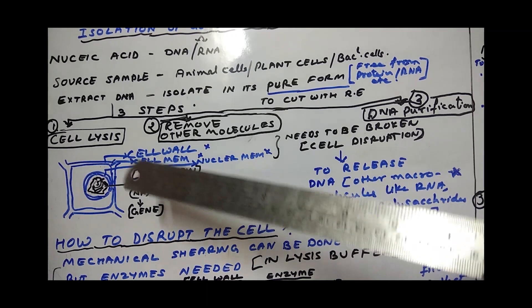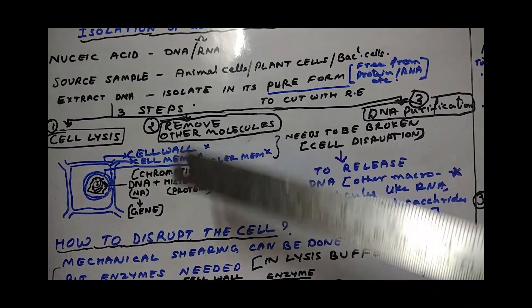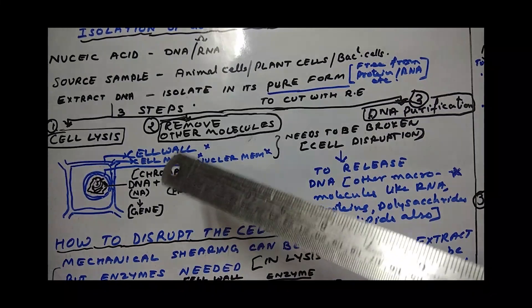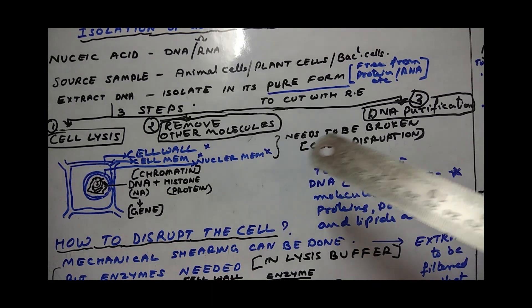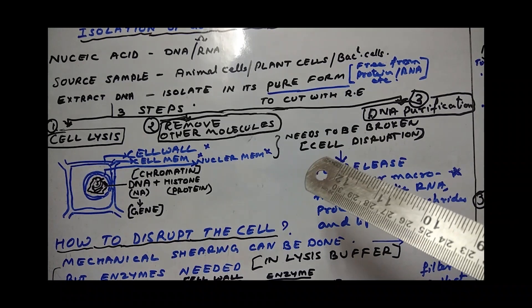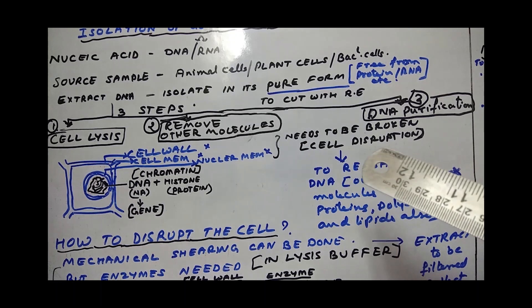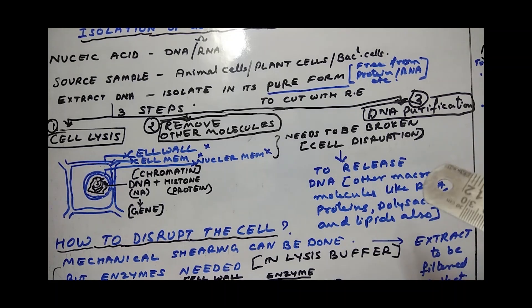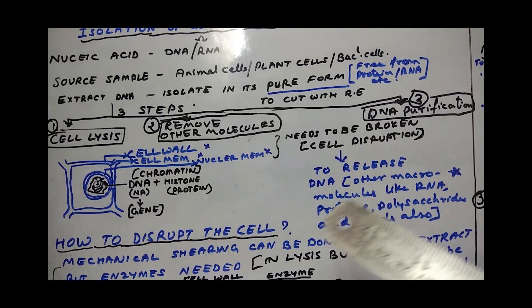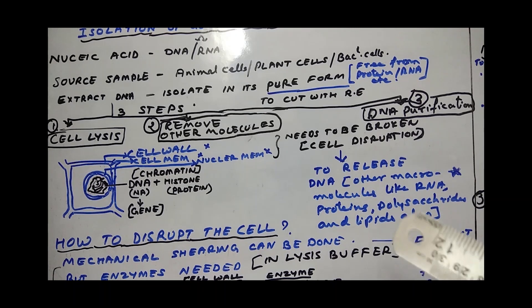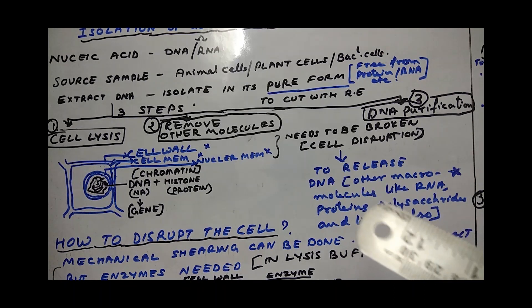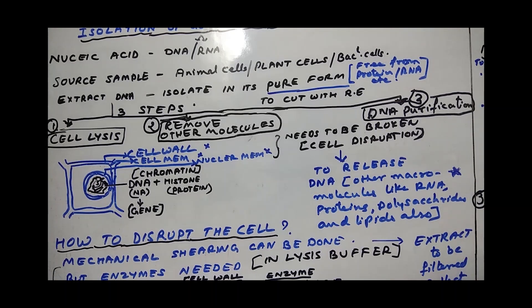For example, if this is a plant cell and I am going through the step of cell lysis, you have to break down the cell wall, cell membrane, and nuclear membrane. This step is called cell disruption or cell lysis - breaking it down to release DNA and along with any other macromolecules like RNA, protein, polysaccharides, lipids.